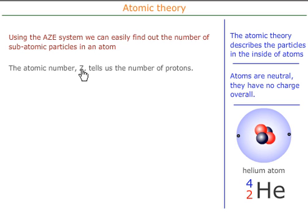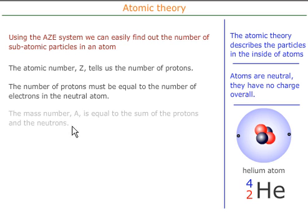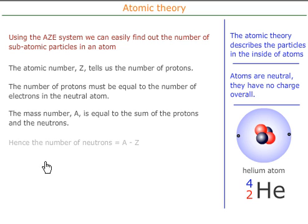We just look for Z, the number of protons, and that must be equal to the number of electrons, because the atom is neutral. And the mass number must be equal to the sum of the protons and neutrons. So to obtain the number of neutrons, we subtract the number of protons from the total mass.